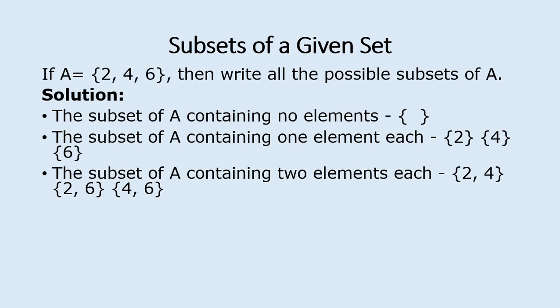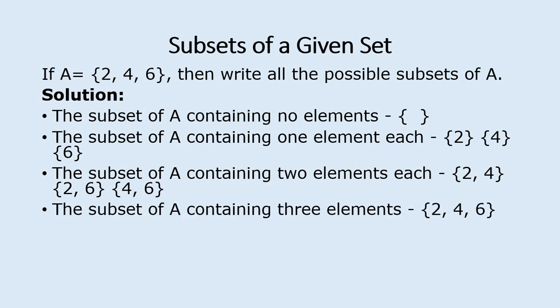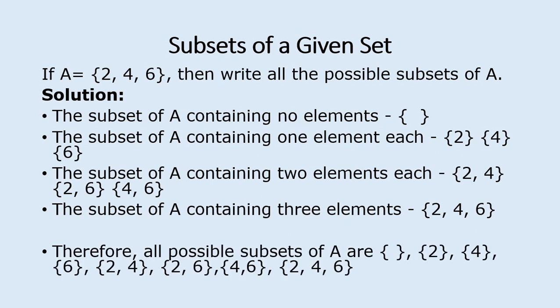Next we move to three elements, and this gives us the entire set itself. So the subset of A containing three elements is {2, 4, 6}, which is just the set A itself. As we know, each set is a subset of itself. All possible subsets are listed and if you count them you will get eight — there are eight subsets of set A.